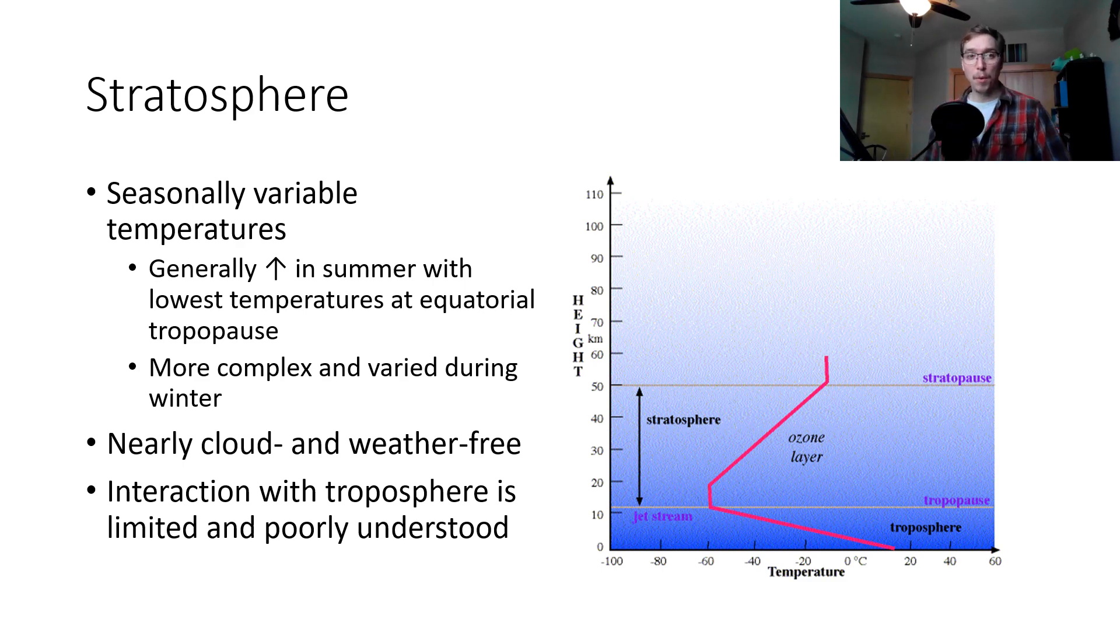Seasonally variable temperatures, generally warmer in the summer with lowest temperatures around the equatorial tropopause, much more complex and varied during the winter. The stratosphere is nearly cloud and weather free, not ultimately but nearly cloud and weather free. An interaction with the troposphere is very limited because of things like the tropopause, it's capping the exchange or preventing the exchange of wind from one layer to the next. It's very poorly understood phenomena, that interaction.